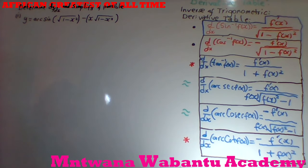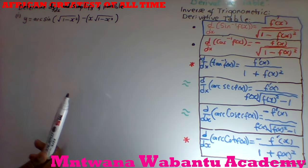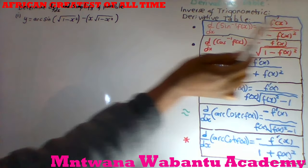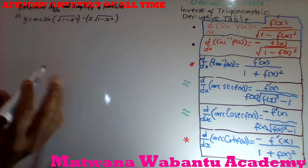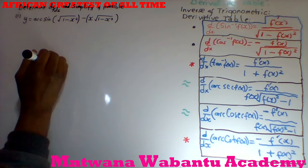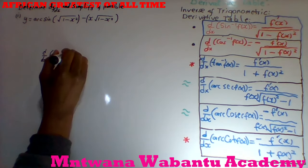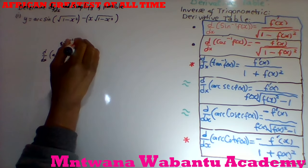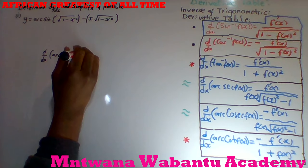We have a question: determine dy/dx and simplify if possible. This is a derivative, so this table is very important. Whenever you differentiate arcsin — when they say x-sine, arcsin, sine-inverse, it's the same thing. You take the derivative of the function and write the answer on top, and then you say one minus the given function squared in the denominator. Same thing if they ask you to differentiate inverse cosine — arc-whatever you have.